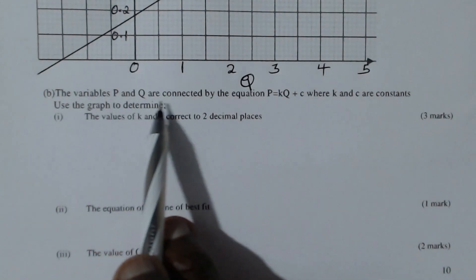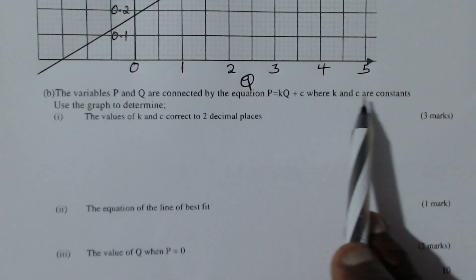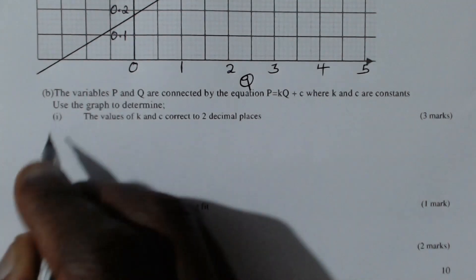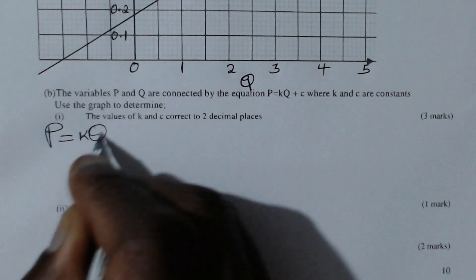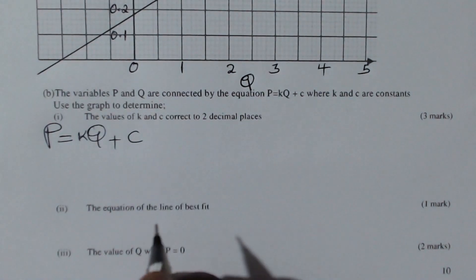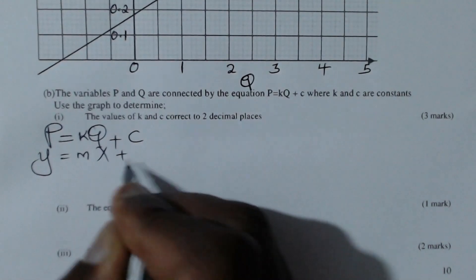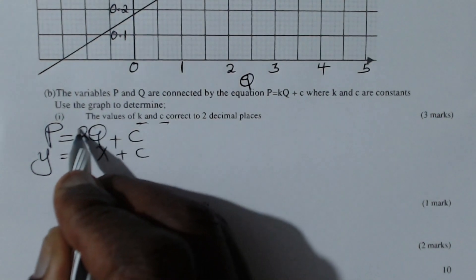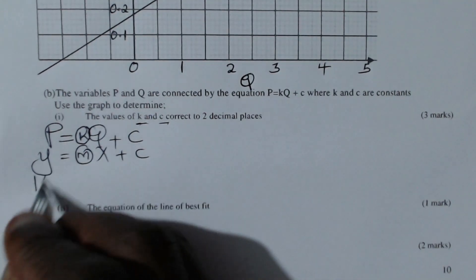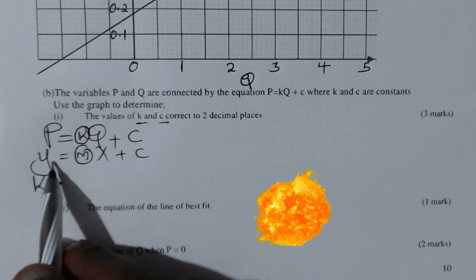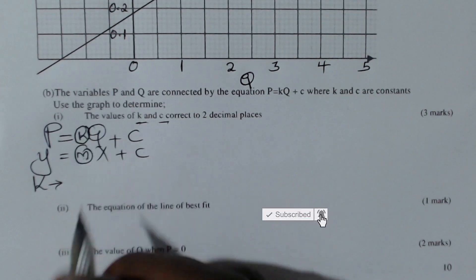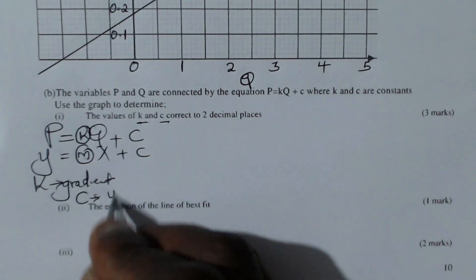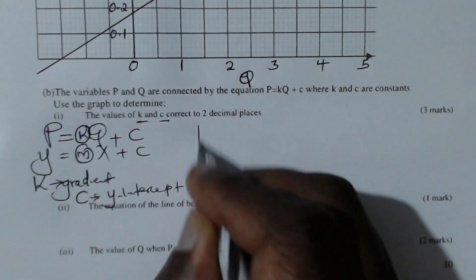For part b, the variables p and q are connected by p equals kq plus c. We compare this with the general equation of a straight line: y equals mx plus c. Comparing the two, k corresponds to m, which is the gradient, so k is the gradient. And c is the y-intercept.